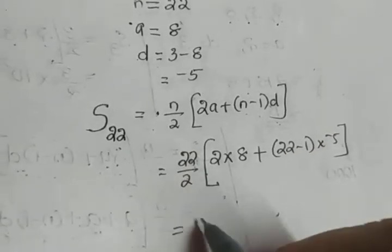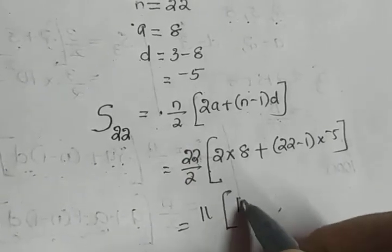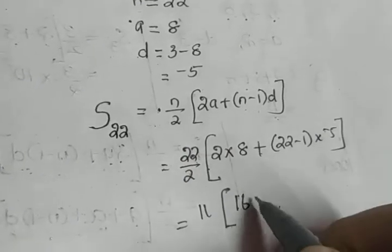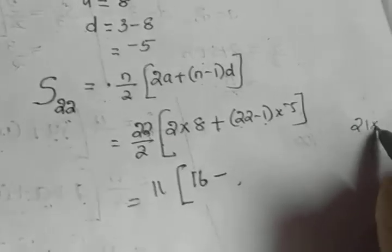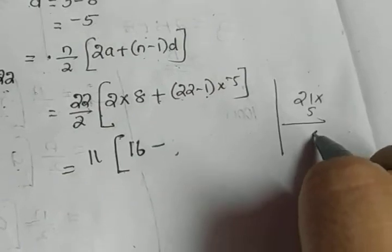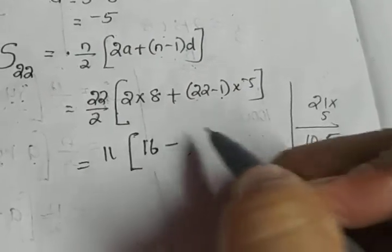That is equal to: 22/2 gives you 11, 8 into 2 gives you 16, plus and minus will give you minus. 22-1 will give you 21, and 21 into 5. What is 21 into 5? 21 times 5 is 105.